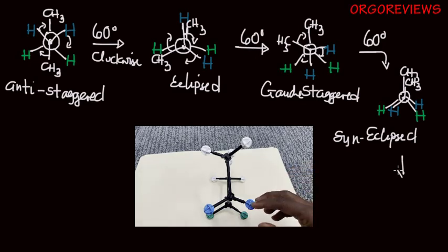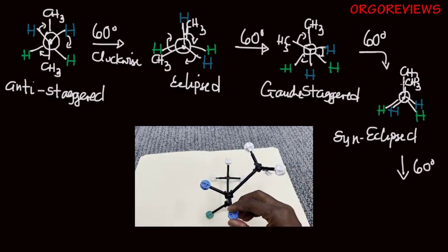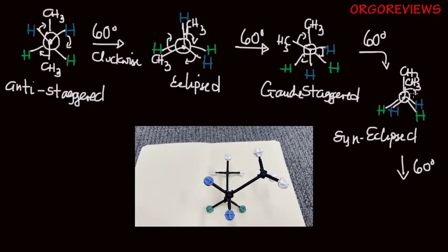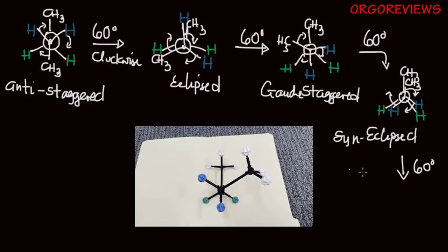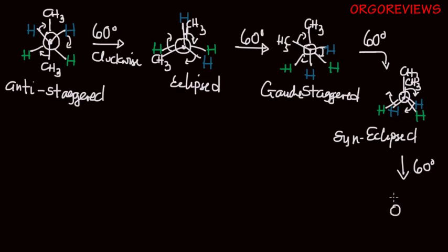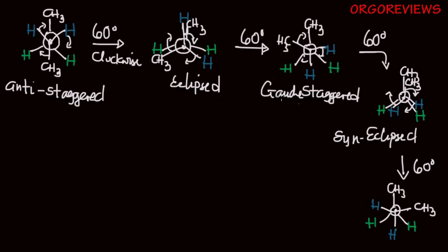If you do another 60-degree rotation, you get another staggered conformation. The methyl group moves, the hydrogens move. You have the CH3 groups at the back with green hydrogens, and the front methyl group is to the side with the blue hydrogens moving up and down. This is going to be a staggered conformation — specifically another gauche staggered. Both gauche staggered conformations are the same.